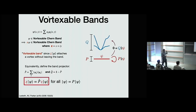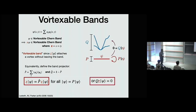More formally, you can define a projector into this particular band and also its complement that projects into everything else. What we're saying is: you pick a state in that band, multiply it by Z, and it remains in that band. Equivalently, Q times Z psi is zero — there are no fragments that go outside the band. That is the definition of vortexability, and once we have this, we can derive its consequences.